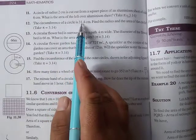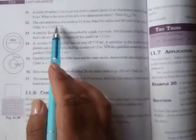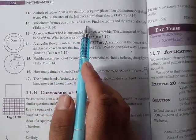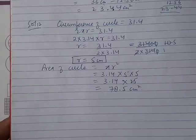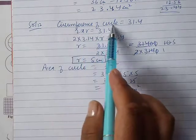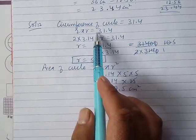The circumference of a circle is 31.4 cm. Find the radius and area of the circle.